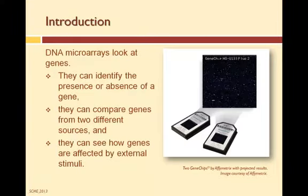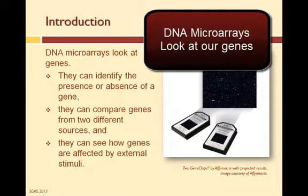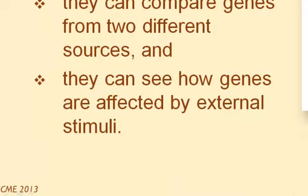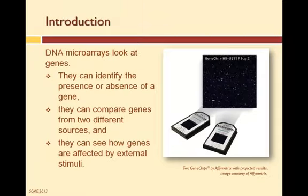So what exactly do DNA microarrays do? In short, they look at our genes. They can identify the presence or absence of a gene. For example, today's microarrays can test a person's genes to see if specific cancer genes are present, such as the genes for breast cancer or the genes for prostate cancer. DNA microarrays can compare genes from two different sources, such as comparing human genes against the genes of a mosquito, or comparing the genes of two different people. They can also see how genes are affected by an external stimulus, such as UV light from the sun, a specific chemical, or a drug.